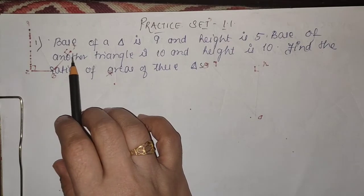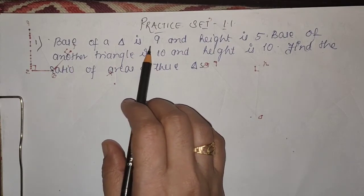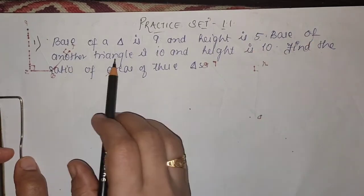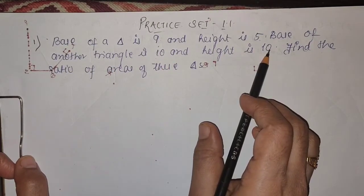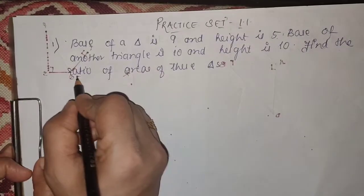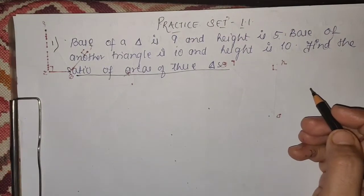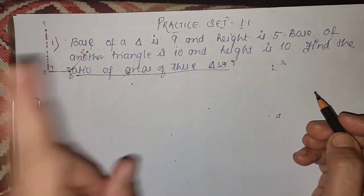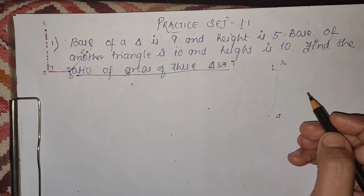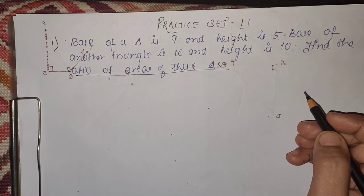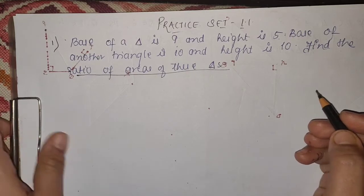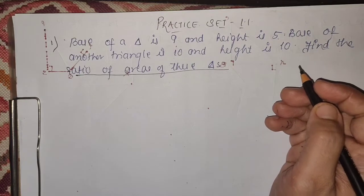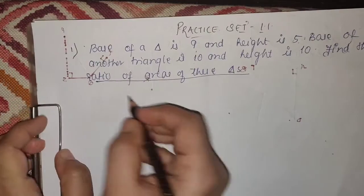Let us move to practice set 1.1. See the first question: base of a triangle is 9, height is 5; base of another triangle is 10, height is 6. Find the ratio of areas. Immediately your mind should click: are the triangles similar or not? There is nothing given about similarity here, so immediately we should remember the formula: B1 into H1 upon B2 into H2.